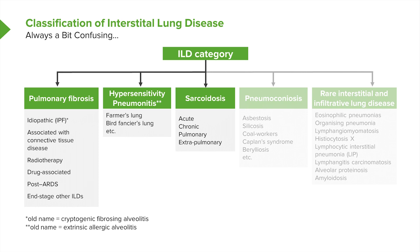Sarcoidosis, the cause of which is unknown, is a disease in which you get infiltration of the lungs with granulomas. It can present as an acute or chronic disease, with either lung involvement — pulmonary sarcoidosis — or involvement of other organs — extrapulmonary sarcoidosis. Then there are pneumoconioses, which are a non-allergic response to inhaled substances such as coal dust and asbestosis, causing interstitial lung disease of various different patterns depending on the substance inhaled.